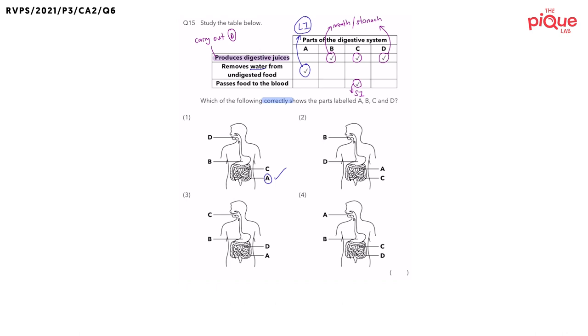What about for option two? For option two, did they label A as the large intestine? No. Instead, they label A as the small intestine, which means is option two possible? No. So, let's cross it out.